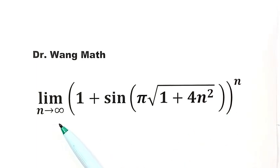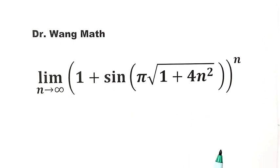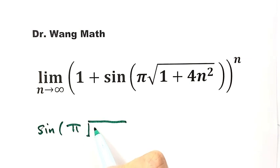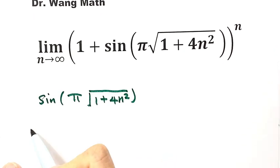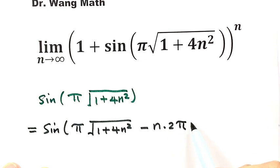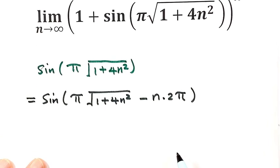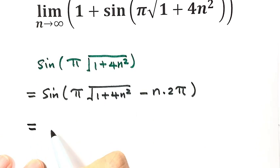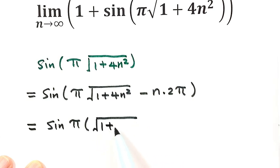How to solve this question? We're going to start with the sine part: sine of π times √(1 + 4n²). Because sine has a period of 2π, this equals sine of the inside minus n times 2π. Taking out the common factor π, we get sine of π times (√(1 + 4n²) minus 2n).